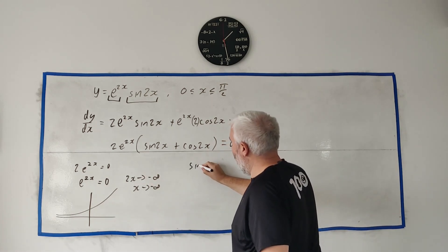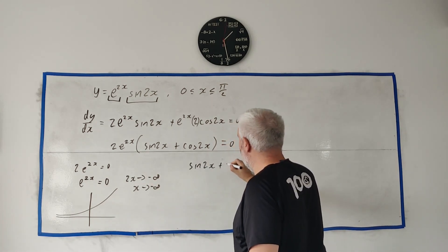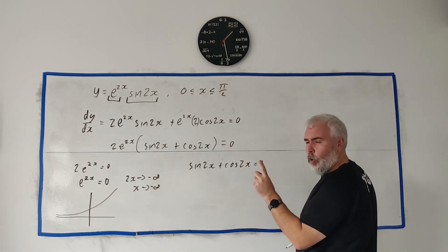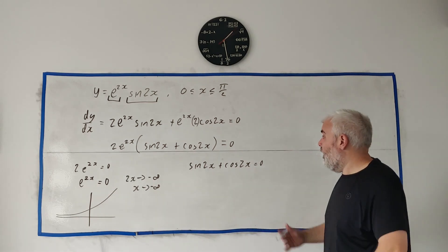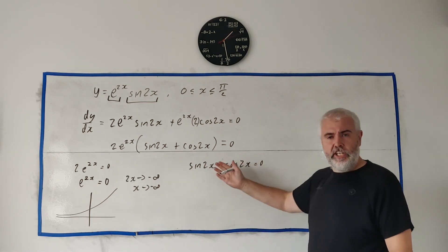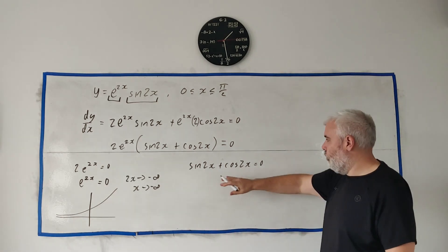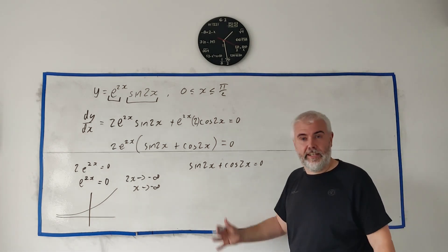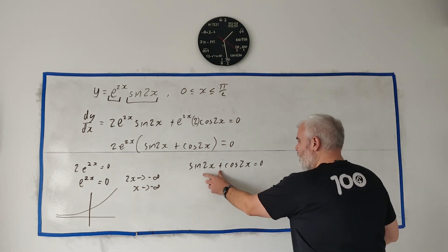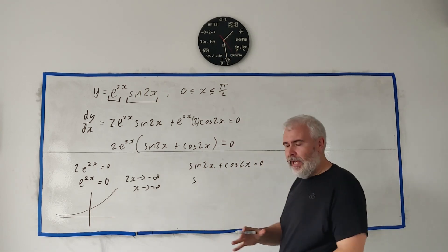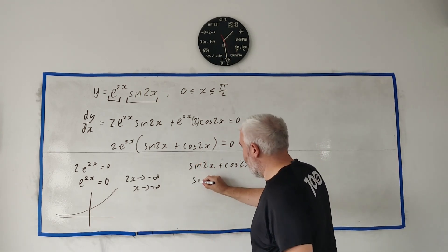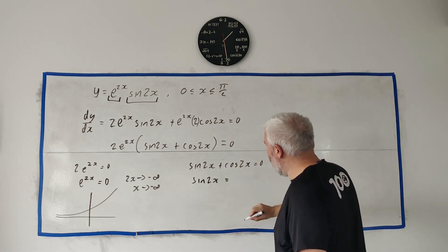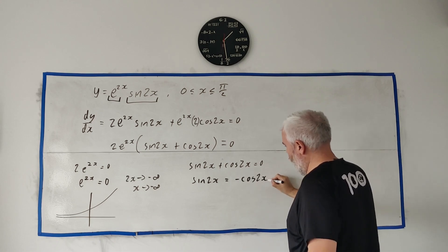So what could be zero must be this guy here. So we'll go sin(2x) plus cos(2x) equals zero. How do we solve this? There's only one unknown x so we can solve this. It's a fairly common equation to see, so it's good to remember the technique for solving something like this. Let's move one over to one of the sides. sin(2x) equals minus cos(2x).